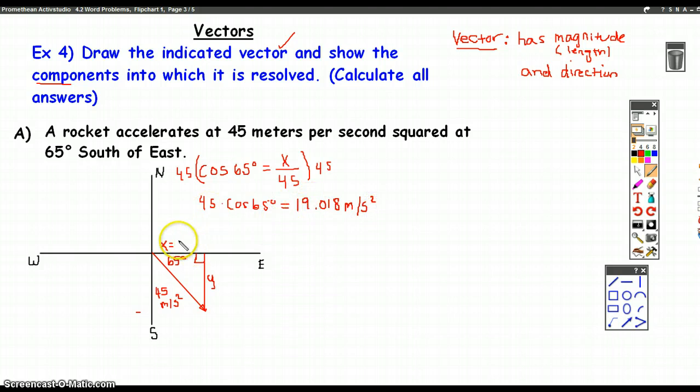19.018. And my units are meters per second squared. So this is 19.018 meters per second squared. And what I'm going to write after that is east, because that is the direction. That is the direction. I'm going to actually put in the arrow.